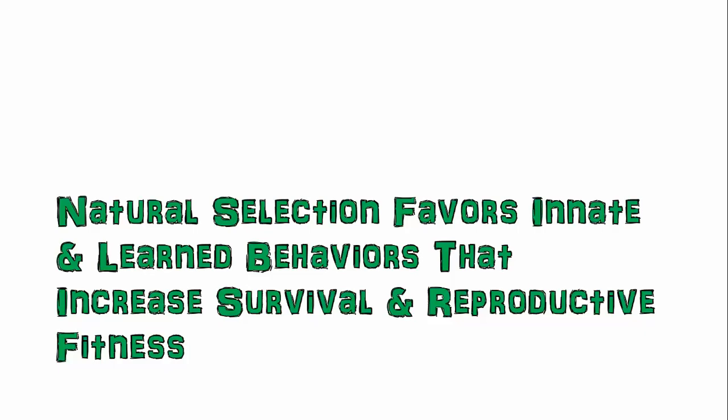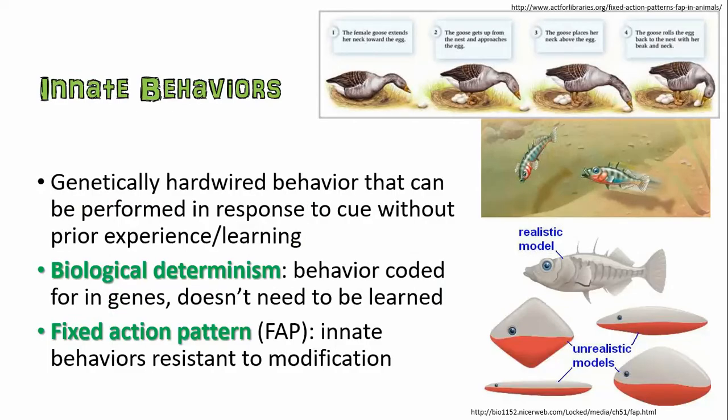Natural selection favors behaviors that increase survival and reproductive success. There are multiple types of those behaviors: innate behaviors and learned behaviors. Innate behaviors are usually genetically hardwired — they do not have to be learned. There'll be some sort of physical action or response that happens to some cue, and an organism doesn't have to learn this; they'll just do it automatically. This is like biological determinism — you have a behavior that's coded for in your genes. This comes in the form of what we call fixed action patterns, which are these innate behaviors that happen spontaneously and are very hard to break. You may not be able to keep an animal from acting out a fixed action pattern based on a cue.